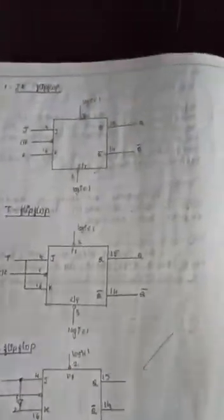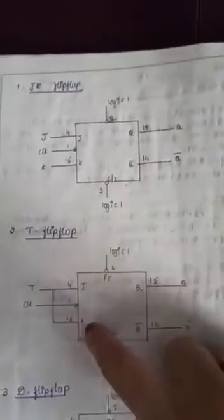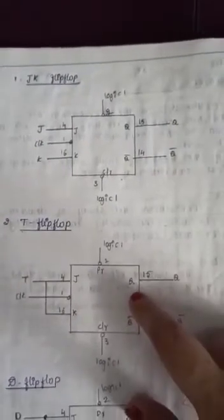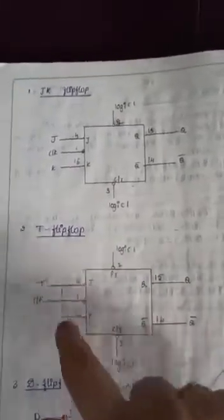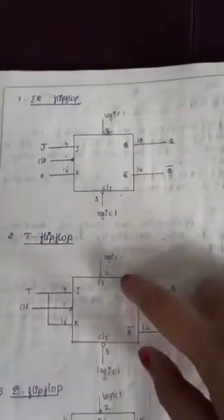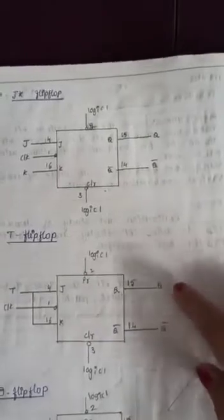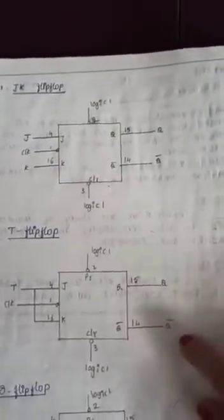The next flip-flop we are going to realize is the T flip-flop. As you can see in the diagram, J and K are shorted — pin number 4 and pin number 16 are shorted. There will be only one input and one output. Pin number 2 and pin number 3 are preset and clear, both at logic 1. The output is at pin number 15 (Q) and pin number 14 (Q bar). That is our T flip-flop.